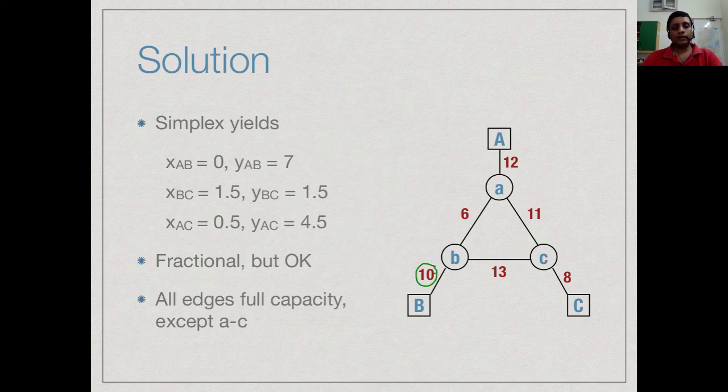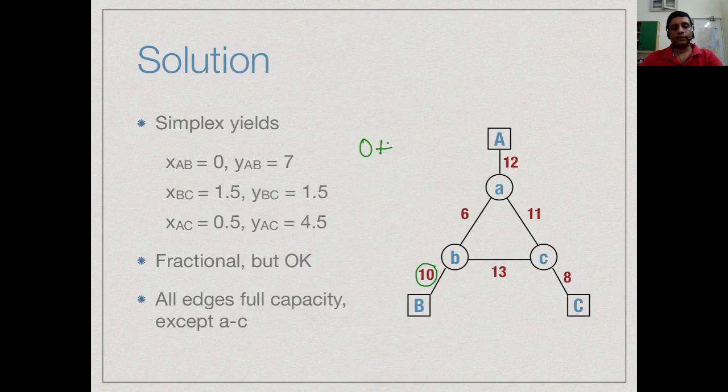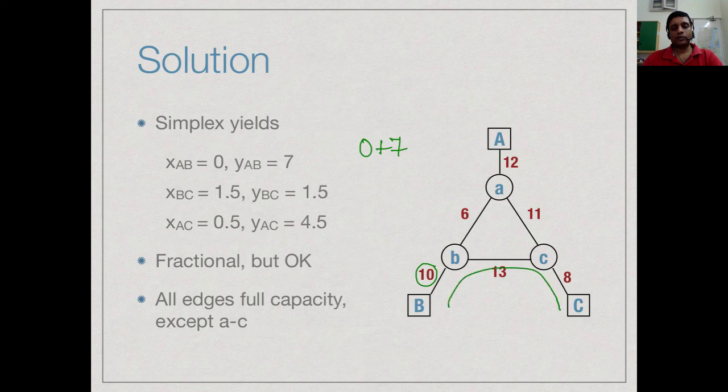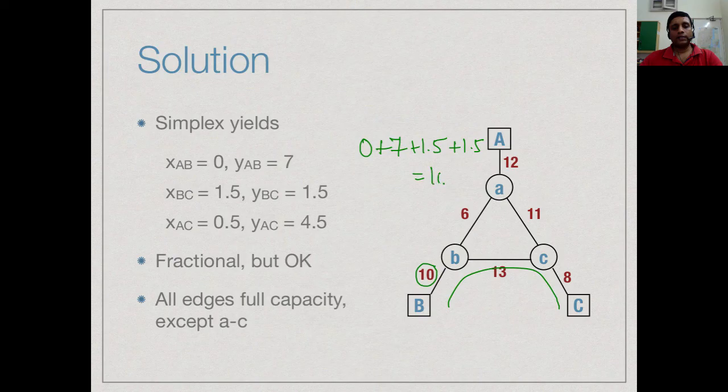This link lies on the direct route from A to B, so that is 0. It lies on the indirect route from A to B, that is 7. It lies on the direct route from B to C, that is 1.5 and it lies on the indirect route from B to C, that is another 1.5 and if you see that this is 10.